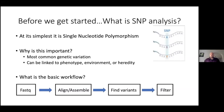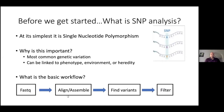Before we get started, what is SNP analysis? At its simplest form, it is single nucleotide polymorphism. Here are three strands of DNA and in one base position we see an A, G, or T — differences between these different individuals or species. SNPs are the most common genetic variation in the genome, and they can be linked to phenotype, environment, or heredity. The basic workflow is that you have your sequencing files from all of your accessions in FASTQ format. You either align or assemble those so you're comparing the same genomic regions. You find variants, then you filter, and then you can move on to downstream analysis, which we will not cover in this webinar.